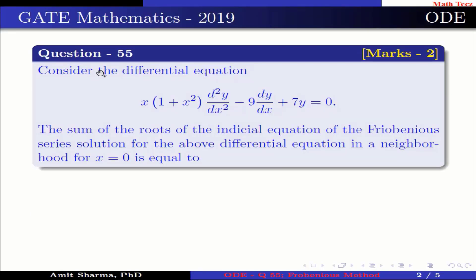The question is: consider the differential equation x(1 + x²) d²y/dx² − 9 dy/dx + 7y = 0. The sum of the roots of the indicial equation of the Frobenius series solution for the above differential equation in the neighborhood of x = 0 is equal to?